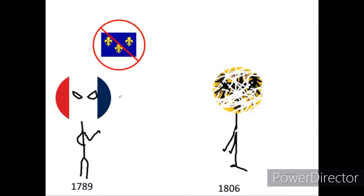Over time, during the Renaissance, feudalism began to fade away, and it came to a stop in the Enlightenment, with events like the French Revolution in 1789, in which the French Republic abolished feudalism, and the dissolution of the Holy Roman Empire in 1806. However, some non-European civilizations took a little longer to phase this system out. Japan abolished its feudal system in 1868, during the Meiji Restoration.